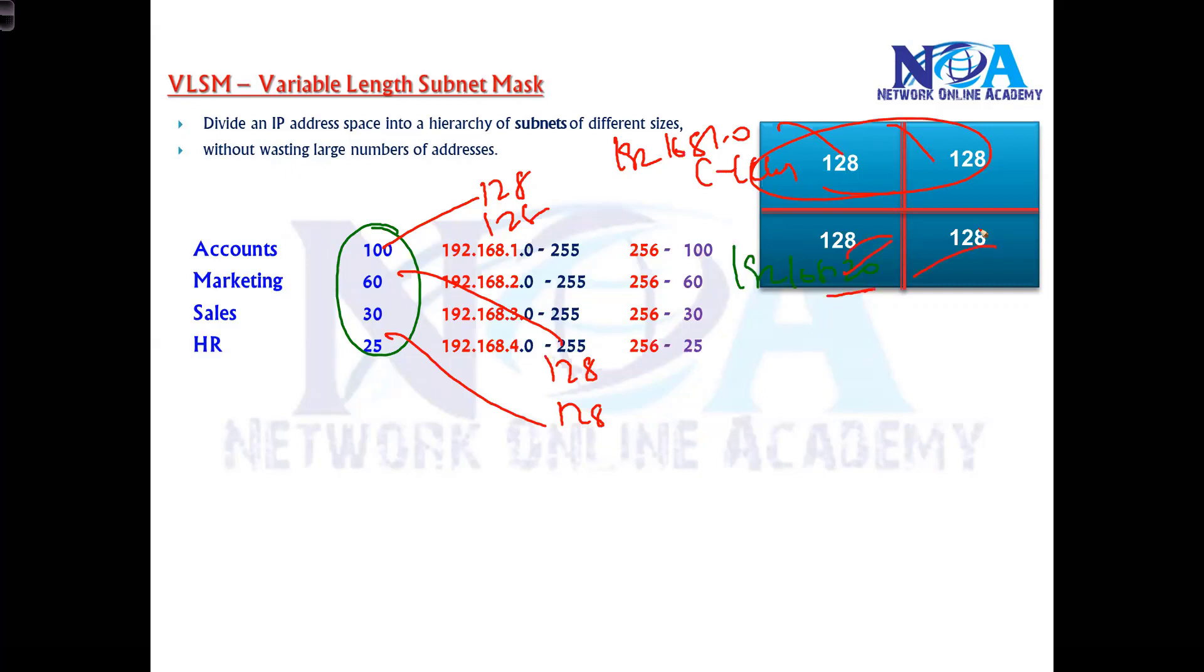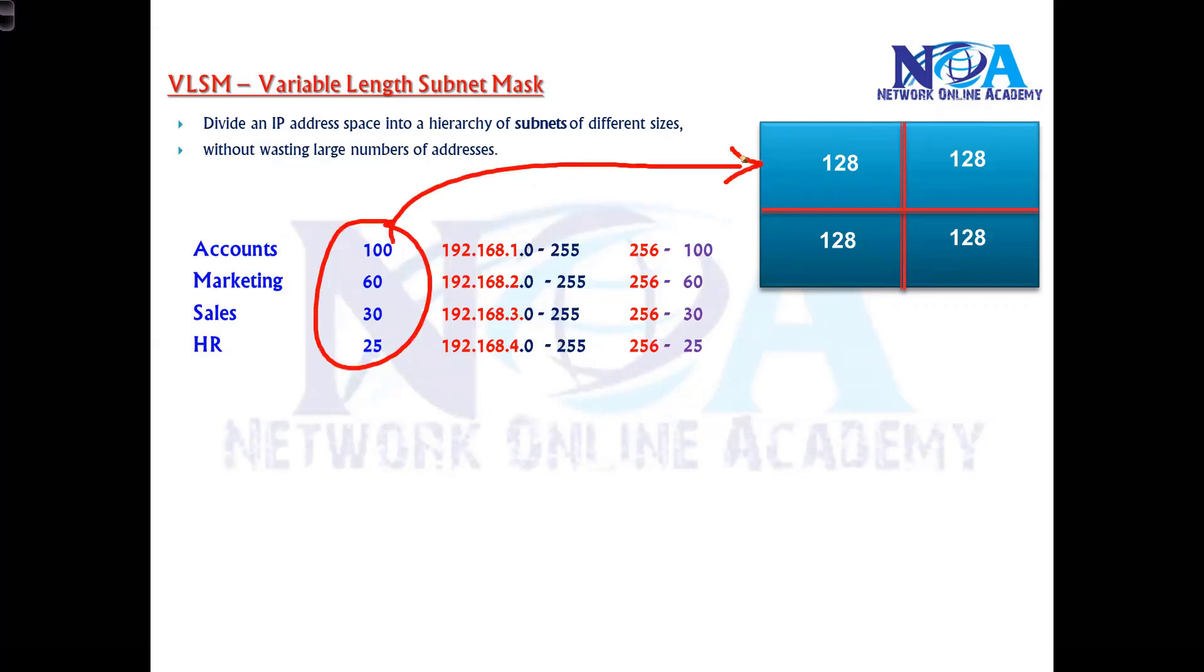In FLSM, we use a fixed-length subnet mask where all networks have the same size. The number of bits will be the same, and the subnet mask will be the same. The subnet mask tells the size of the network - how many host bits - and the host bits determine the actual network size.